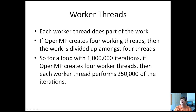Each worker thread does part of the work — the work is separated amongst all the worker threads. Let's say OpenMP creates four worker threads; then the work is divided amongst four threads. So for a loop with a million iterations, if OpenMP creates four worker threads, then each worker thread performs 250,000 of the iterations.